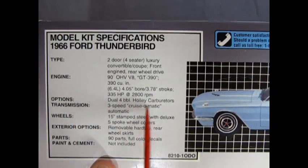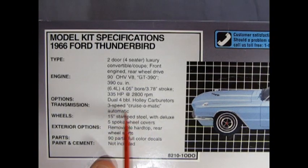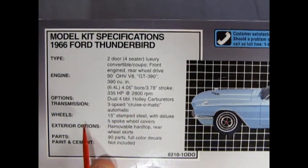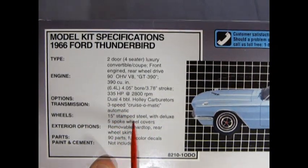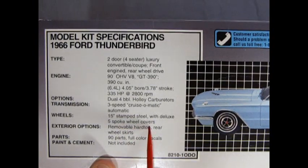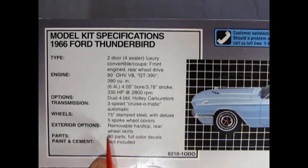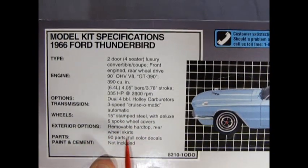Options: Dual four-barrel Holley carburetor. Transmission is a three-speed Cruis-O-Matic automatic. The wheels are 15-inch stamped steel with the luxe five-spoke wheel covers. Exterior options: Removable hardtop rear wheel skirts.